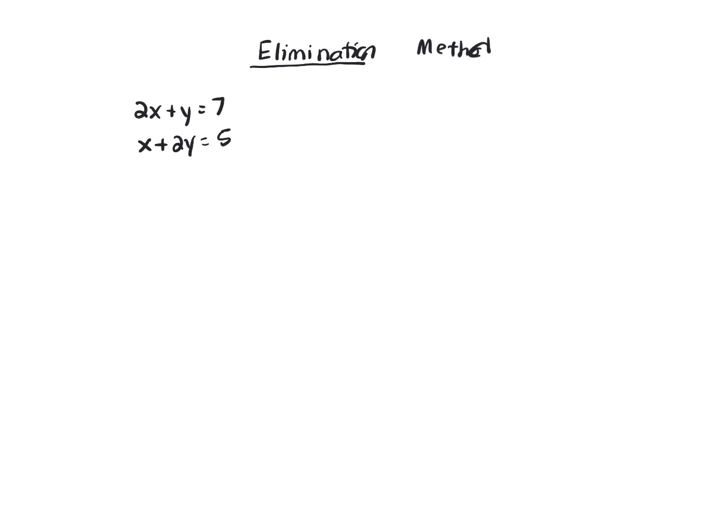I want to add these two equations together and eliminate a variable. So for that to happen, it doesn't matter if you eliminate your x's or y's. I'm going to eliminate my x's, and I'm going to need to multiply the bottom equation by negative 2.